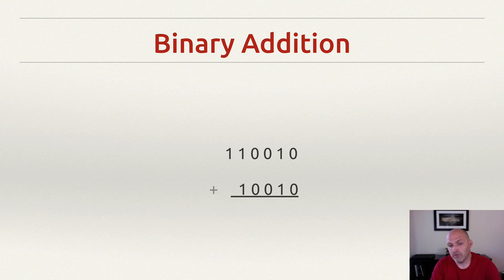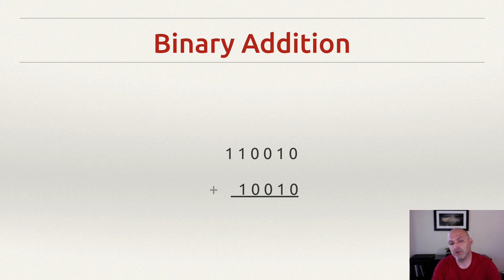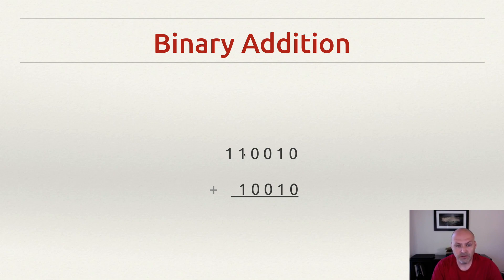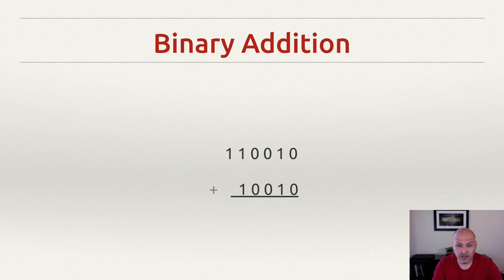The arithmetic is going to be very much the same — these are binary numbers, not decimal. At the top we have 1 1 0 0 1 0, which happens to be the decimal number 50. I know that because the weights are 1, 2, 4, 8, 16, and 32 — so I have 1×32 and 1×16 which makes 48, plus 1×2 which makes 50. Below it I have the number 1 0 0 1 0, which is 18 because I have 1×16 and 1×2.